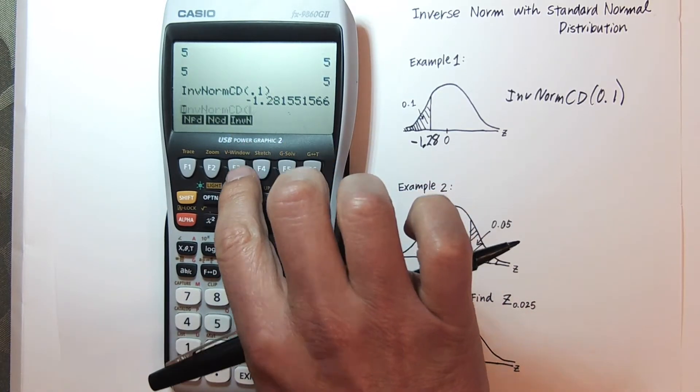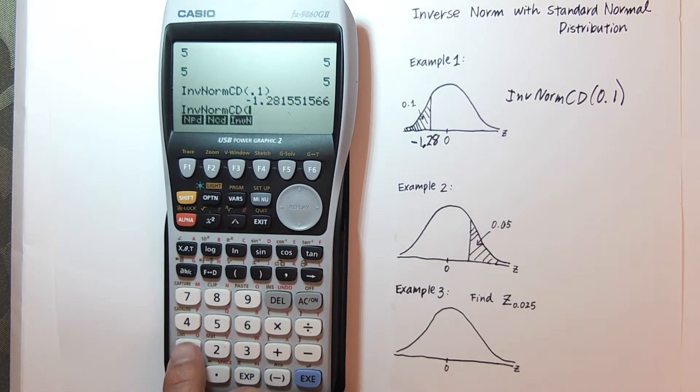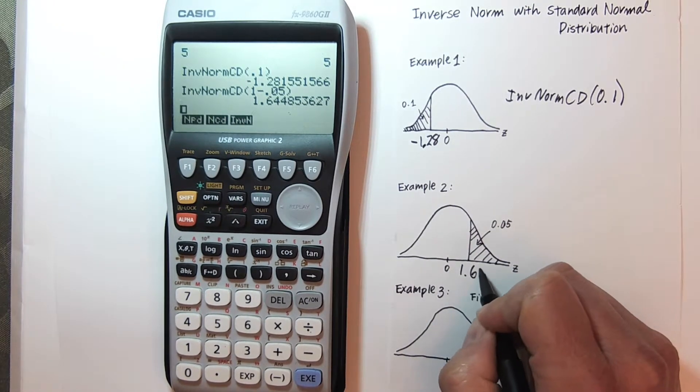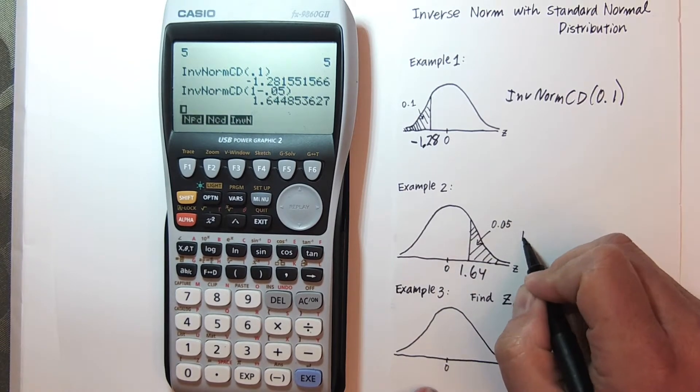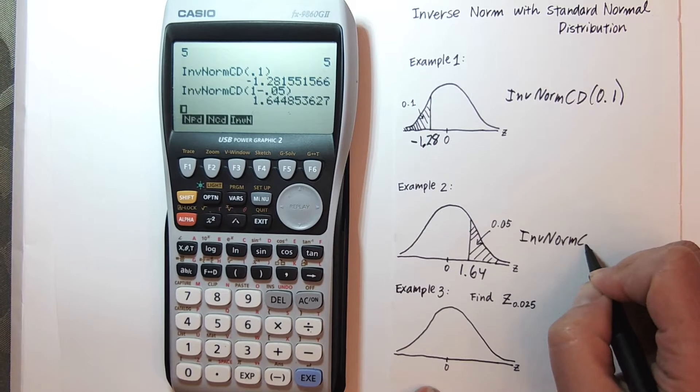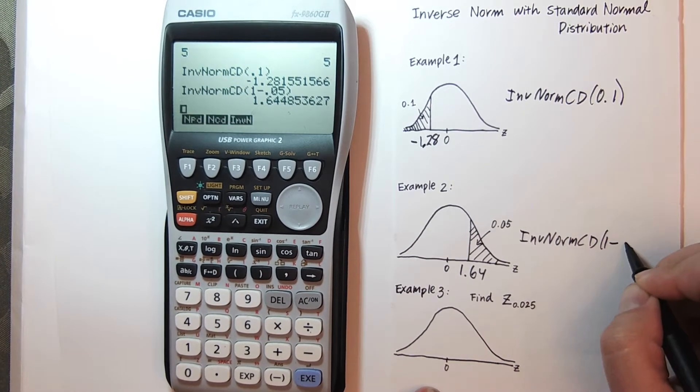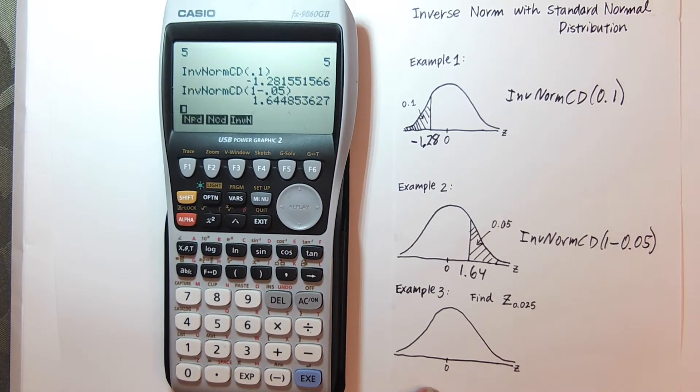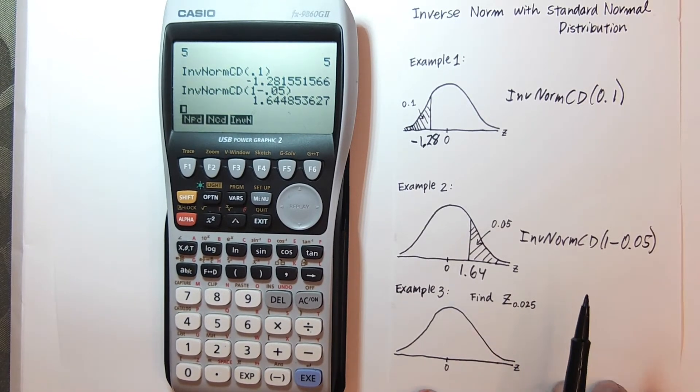So I'm going to hit inverse norm, and directly in here, I can say 1 minus 0.05. And that gives me my positive Z score of 1.64 in this case. Again, that was inverse norm, 1 minus 0.05 to get the positive score.